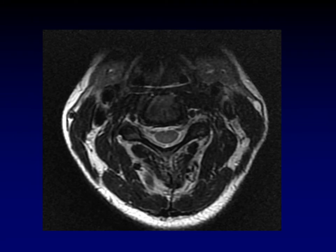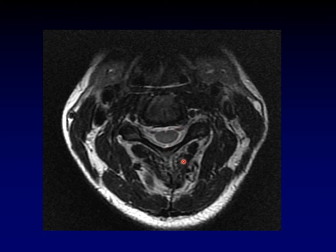One more slide of normal imaging before we jump into the cases. This is a T2-weighted sequence through the cervical spine in axial slice. You can see the vertebra surrounding the central canal, the cord itself, and easily distinguish the cord from the surrounding CSF. Individual nerve roots run through that CSF. The key thing to note is how uniformly dark in signal that cord is — this is a normal T2-weighted image of the cervical spine.